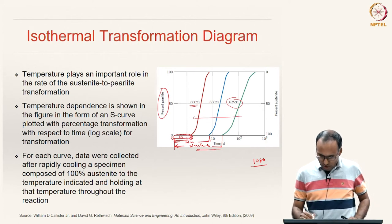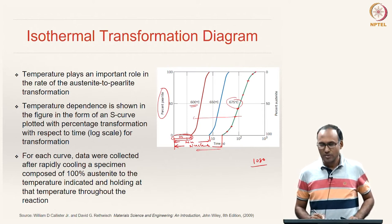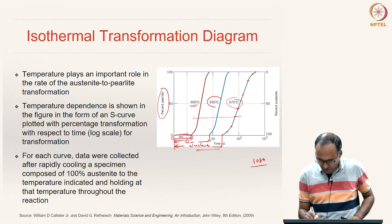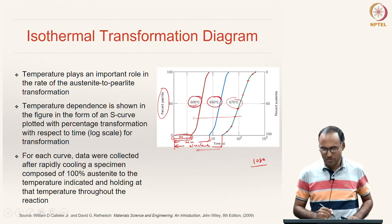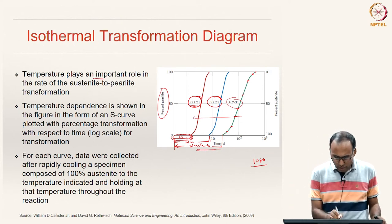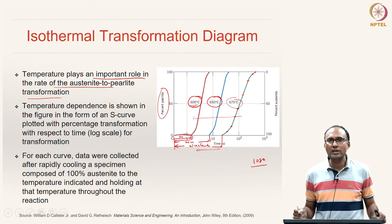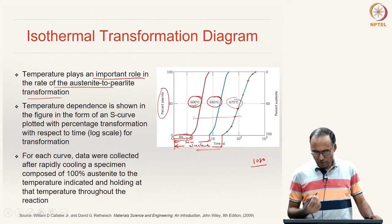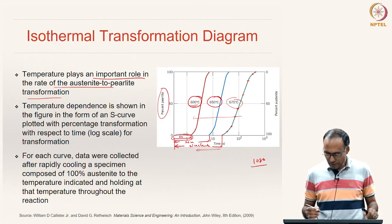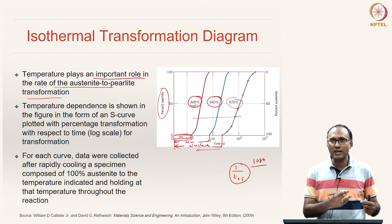You plot growth for all the samples — taking out one sample at each time point. With about 20 samples you get 20 points on the curve. Repeating the same experiment at 650°C and 600°C gives a family of S-curves, clearly showing that temperature plays an important role in the rate of austenite-to-pearlite transformation. Rate is defined as 1 over the time taken for 50% transformation.